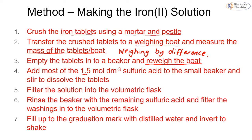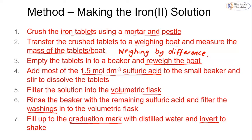We add 1.5 mol dm⁻³ sulfuric acid to a beaker and dissolve the tablets. We then filter into our volumetric flask, rinse the beaker, and add the washings into the volumetric flask — always making sure to add the washings to get all of the solid out. We then fill it up to the graduation mark with distilled water, put the stopper on, and invert. If you can't remember how to make a standard solution, check out the video on core practical 3 from year 12.